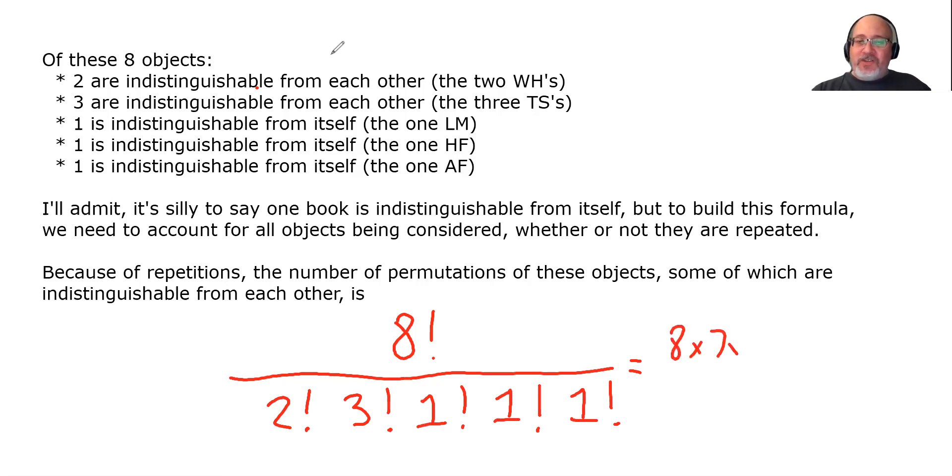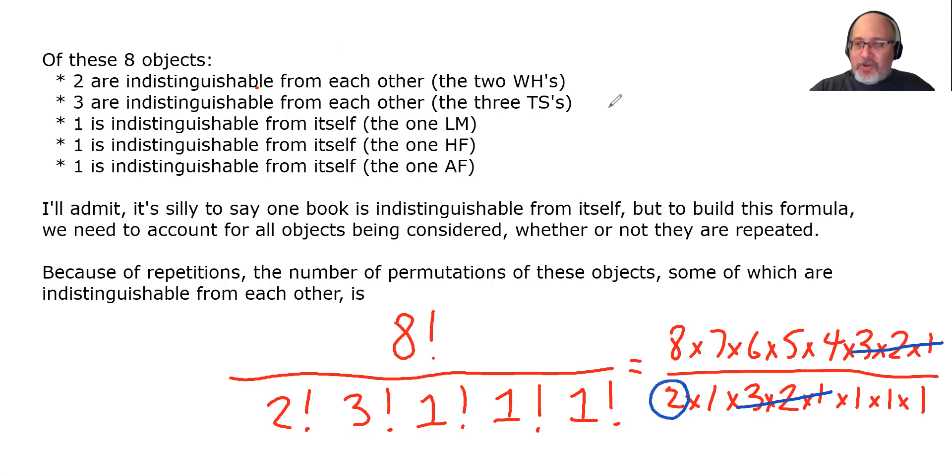8 factorial goes 8, 7, 6, 5, 4, 3, 2, 1. And if we expand all the factorials in the denominator, 2 factorial is 2 times 1, 3 factorial is 3 times 2 times 1. And all of the 1 factorials are just 1s, and frankly, don't really matter. And then we start canceling things, if we can. The biggest chunk we can cancel in mass is the 3, 2, 1. And then we also have this 2 down here, which we can divide into any even number on the top. We'll divide it into this 4. 2 goes into 4, 2 times. Notice that the only numbers remaining in the denominator are 1s. So at this point, we're dividing by 1, so we're done with the denominator.